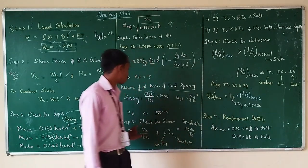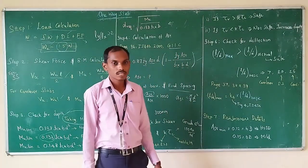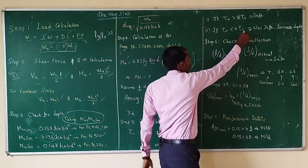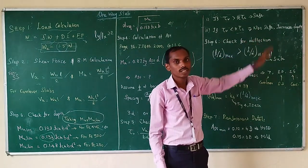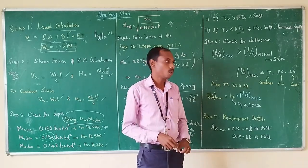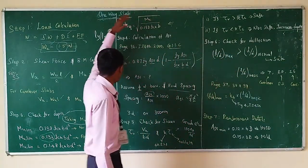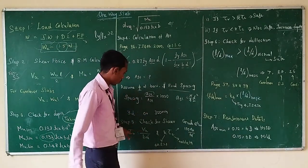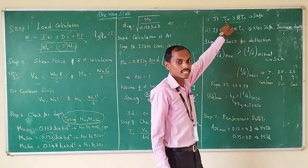After calculating both values, check: if τV is less than or equal to K × τC, the slab is safe in shear. If not, you cannot provide shear reinforcement in a slab; the only option is to increase the overall depth of the slab and redesign, repeating all steps until the shear condition is satisfied.